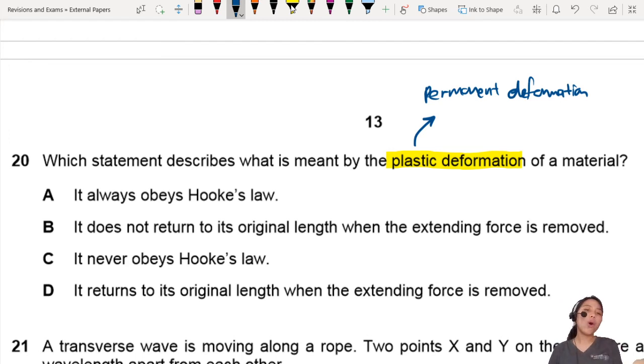But let's go through A. It always obeys Hooke's Law. Hooke's Law is talking about f equals kx, or f proportional to x. In other words, it's saying if you have a straight line graph, f against x, you obey Hooke's Law. That's nothing to do with permanent deformation. That's not plastic deformation. So no, this is not what we're talking about.